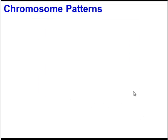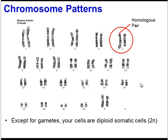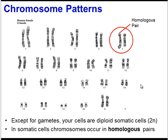Let's start by reviewing patterns of chromosomes in cells. This is a karyotype of all the chromosomes in a typical human body cell — a female cell. Note that, except for gametes, your cells are diploid somatic cells. Diploid means that you have homologous pairs of chromosomes. So for humans, you have 23 chromosomes that occur in pairs for a total of 46.